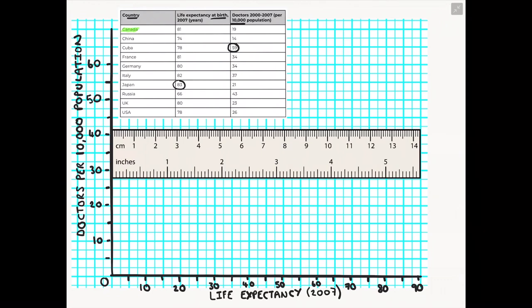So we're going to start by plotting our first point for Canada. So as we can see in our data table, Canada has a life expectancy of 81 years and it then has 19 doctors per 10,000 of the population. So the first thing I recommend is that you highlight your data set so you can see it really clearly. This way you won't get it confused with any other countries in your table.